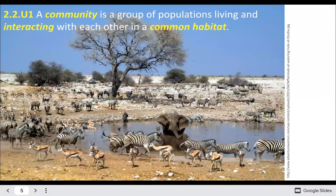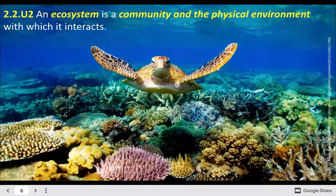A community is different species or populations that live together in the same environment. An ecosystem is the community and its physical environment — both abiotic and biotic factors.